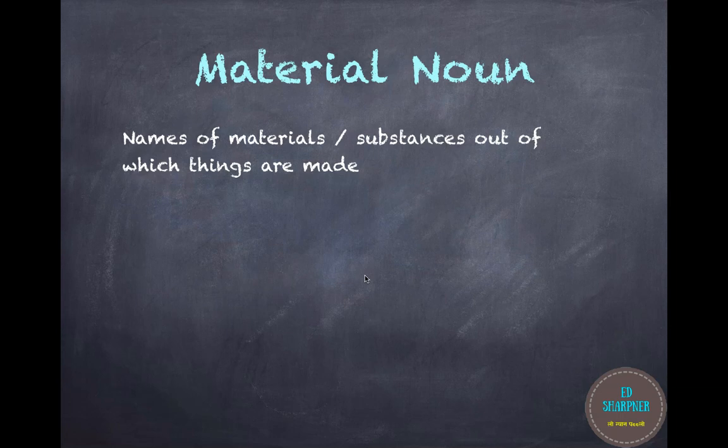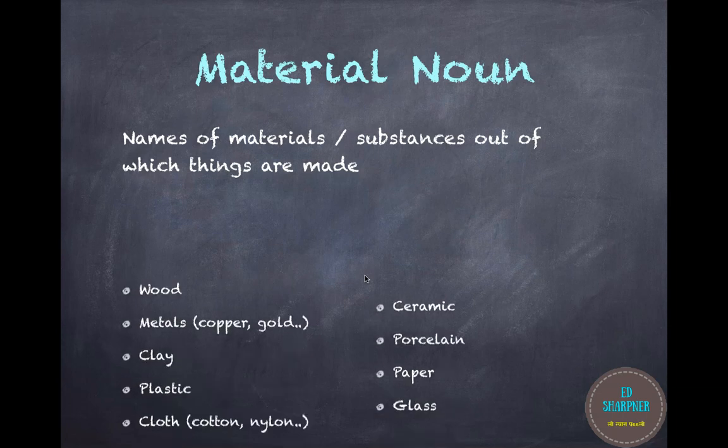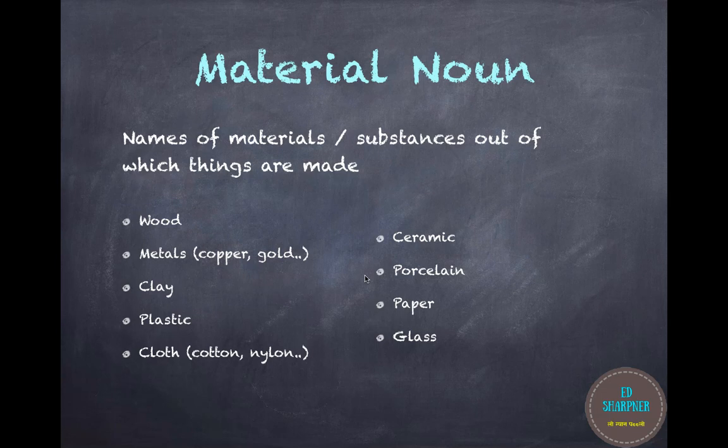Material nouns are the names of materials or substances out of which things are made. For example, wood, or metals like copper and gold, clay, plastic, cloth, etc. These are not classified as any other four types — they are called material nouns.